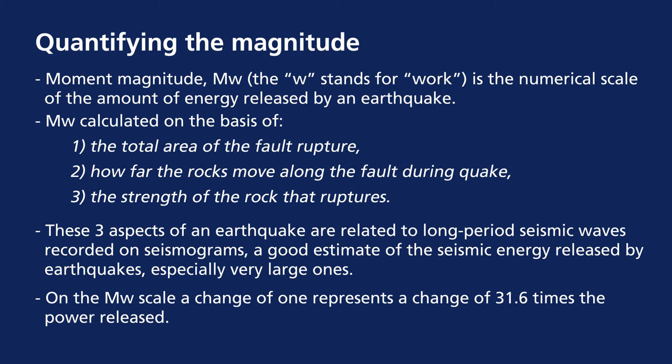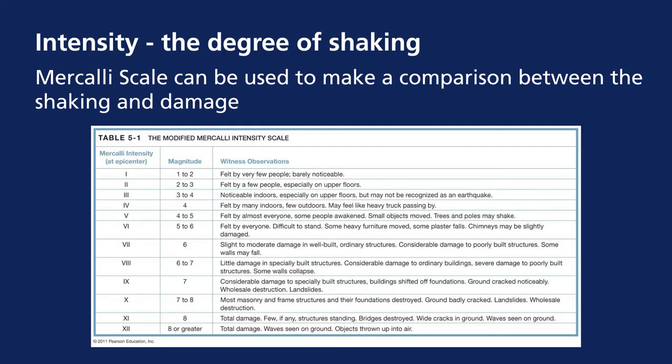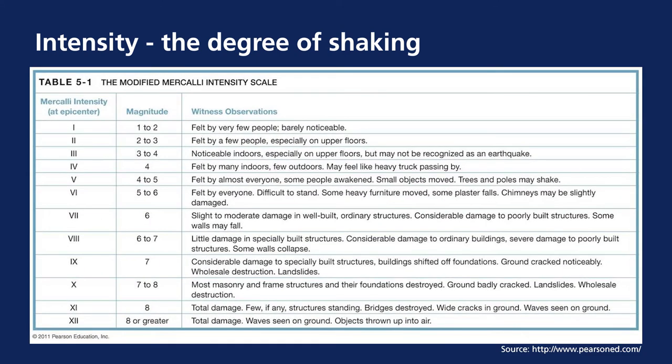On the MW scale, a change of 1 — for example going from magnitude 1 to 2, or 2 to 3 — represents a change of 31.6 times the seismic power released. The degree of shaking can also be measured using the Mercalli intensity scale, which is defined by the amount of damage witnessed by observers. There are therefore two scales: the moment magnitude (Richter) scale and the Mercalli intensity scale.